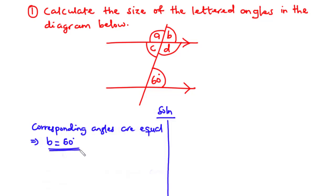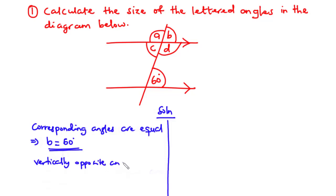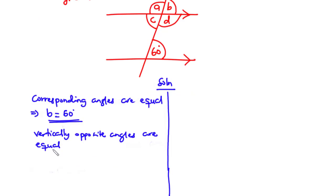Now angles B and C are vertically opposite angles, and vertically opposite angles are equal. Since B equals C, and B is 60 degrees, the value of C is also 60 degrees.